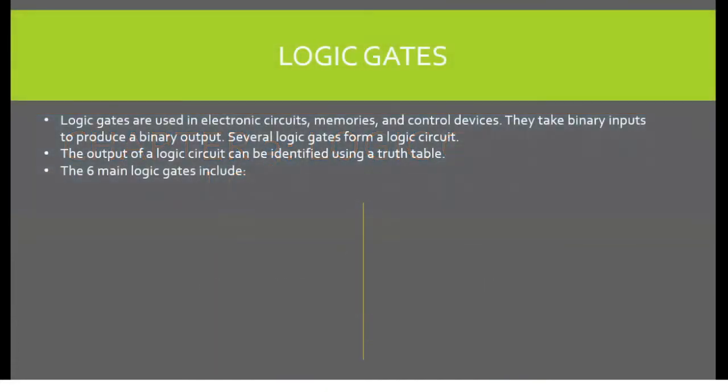Logic gates are used in electronic circuits, memories, and control devices. They take binary inputs to produce a binary output. Several logic gates form a logic circuit. The output of a logic circuit can be identified using a truth table. The six main logic gates include: